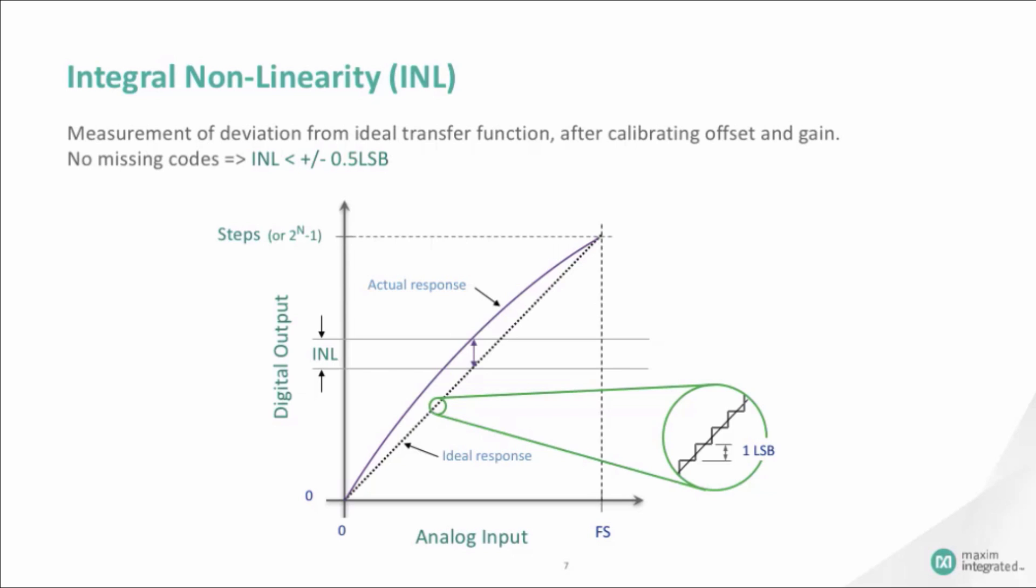The endpoint INL passes a straight line through the endpoints of the converter's transfer function, thereby defining a precise position for the line. Thus, the straight line for an end-bit ADC is defined by its zero, or all zeros, and its full-scale, or all ones, outputs. The INL affects the true resolution of an ADC.